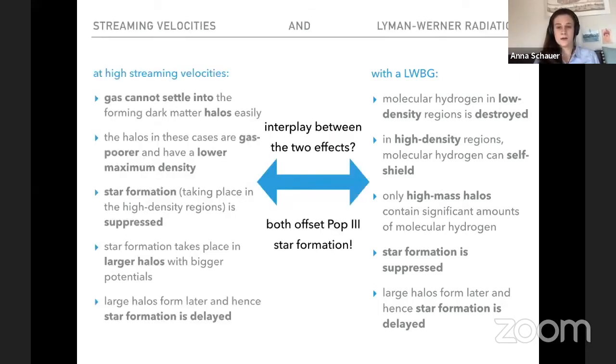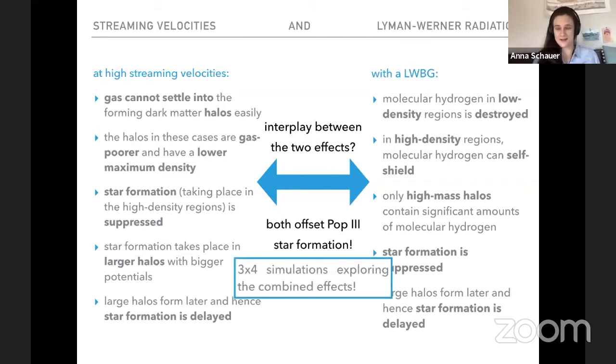If you now compare those two effects, so I show you now the combined two effects slide. If you compare the bottom point of those, that's exactly the same. So both effects delay star formation. And we ask ourselves the question, what is the interplay between those effects? Which one plays the stronger role? And of course, in our case, the solution to this problem is running more simulations.